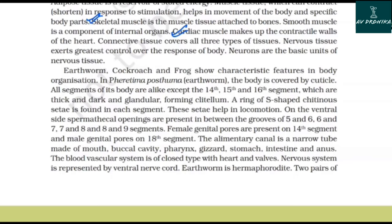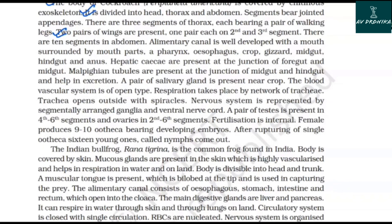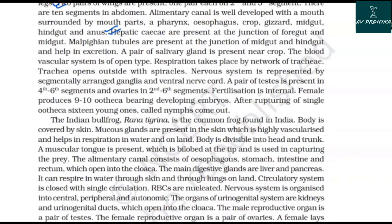The body of the cockroach Periplaneta americana is covered by a chitinous exoskeleton and is divided into head, thorax, and abdomen. Segments bear jointed appendages. There are three thoracic segments, each bearing a pair of walking legs. Two pairs of wings are present — one pair each on the second and third thoracic segments. There are ten segments in the abdomen. The alimentary canal is well developed, consisting of mouth, pharynx, oesophagus, crop, gizzard, midgut, hindgut, and anus. Hepatic caeca are present at the junction of foregut and midgut. Malpighian tubules at the junction of midgut and hindgut help in excretion. The blood vascular system is of the open type. Respiration takes place through a network of trachea opening via spiracles. The nervous system is represented by segmentally arranged ganglia and a ventral nerve cord. A pair of testes is present in the 4th to 6th segments and ovaries in the 2nd to 6th segments. Fertilization is internal. Females produce 9 to 10 oothecae, each yielding 16 nymphs.